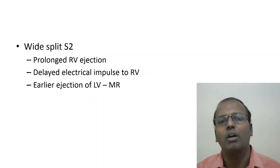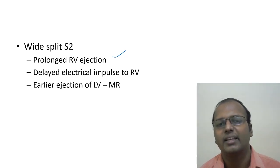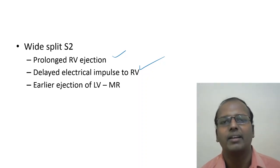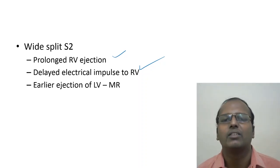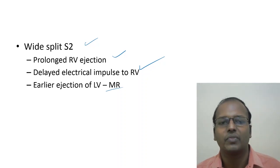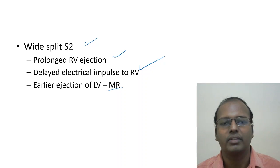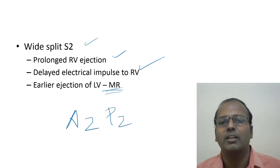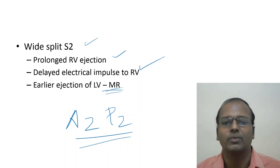Wide split causes include right bundle branch block — where muscle-to-muscle conduction in the right ventricle delays P2 — and pulmonary stenosis, where the right ventricle takes longer to empty through a narrow valve. In mitral regurgitation, blood escapes into the left atrium during systole, so less blood goes through the aortic valve, causing earlier aortic valve closure (early A2) with normal P2, producing wide split. VSD also causes wide split by a similar mechanism of early A2 and delayed P2.